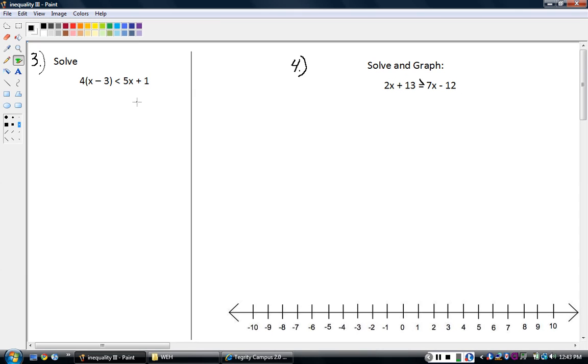Four times x minus three is less than five x plus one. The first thing we do, of course, is distribute, just like with an equation. Everything's the same except for that one step of flipping that sign around if we need to. So I distribute the four. So I get four x minus 12 is less than five x plus one.